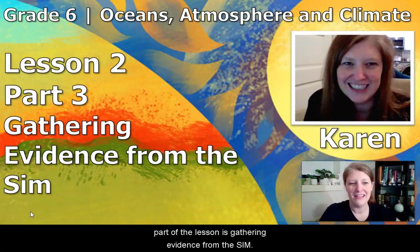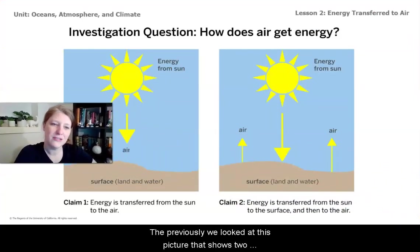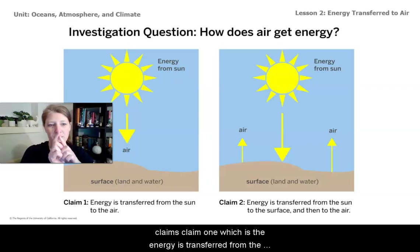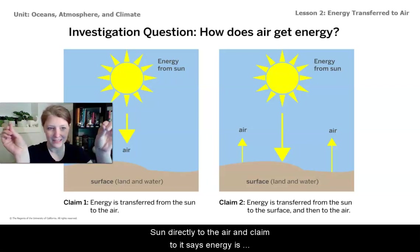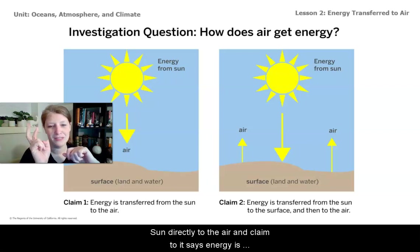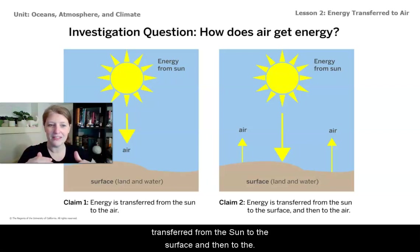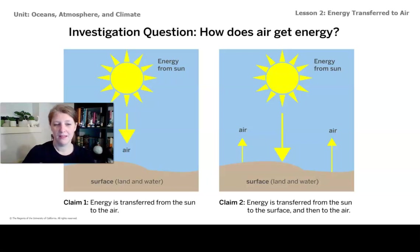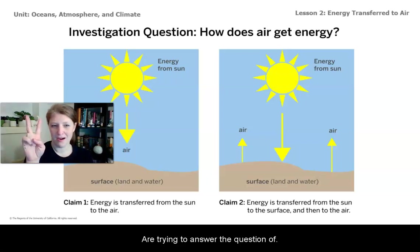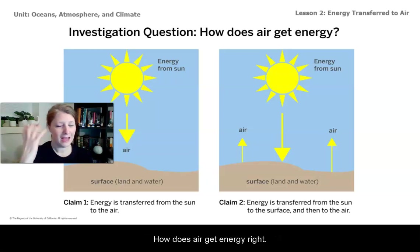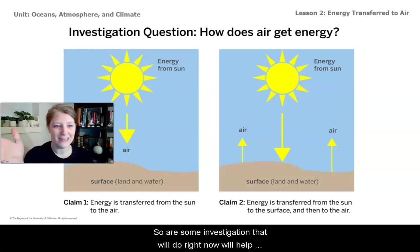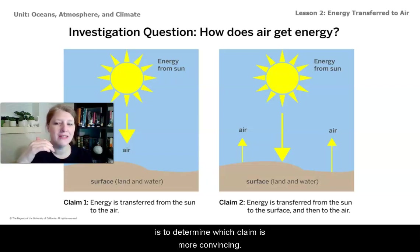The title for this part of the lesson is Gathering Evidence from the Sim. Previously we looked at a picture that shows two claims. Claim one: energy is transferred from the sun directly to the air. Claim two: energy is transferred from the sun to the surface and then to the air. Both claims are trying to answer the question of how does air get energy. Our sim investigation will help us determine which claim is more convincing.